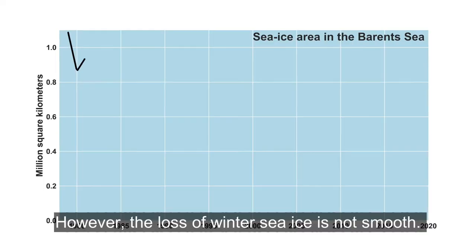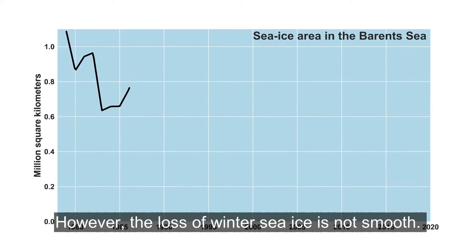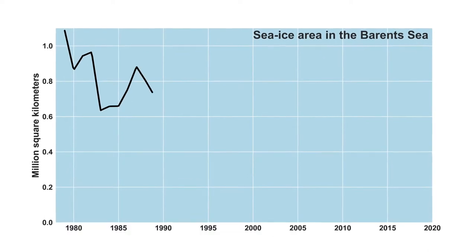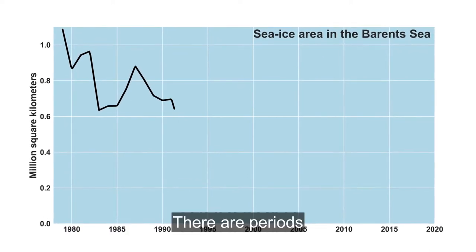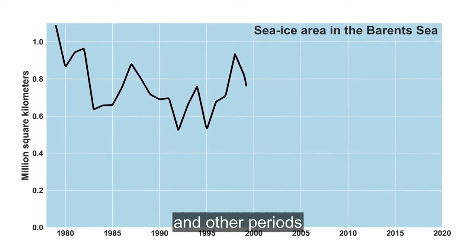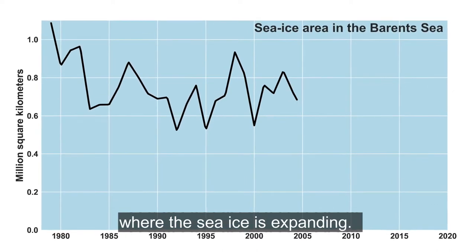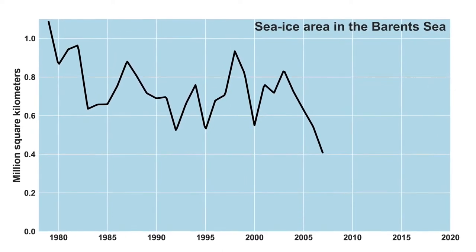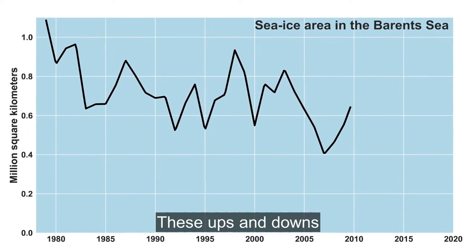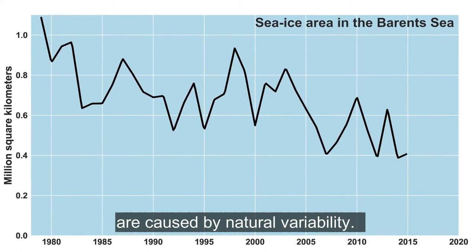However, the loss of winter sea ice is not smooth. There are periods where the sea ice retreats very quickly, and other periods where the sea ice is expanding. These ups and downs are caused by natural variability.